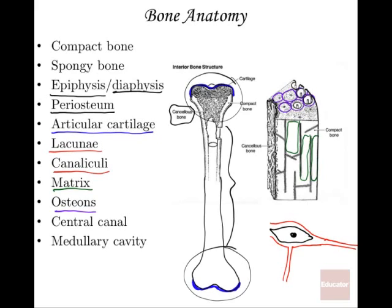Central canal. Within each osteon, there is a major thoroughfare for fluid and blood flow to those sections. And finally, medullary cavity — the word medulla means inner. This region within the middle of the bone that's hollow is the medullary cavity, where you're going to have a lot of bone marrow.